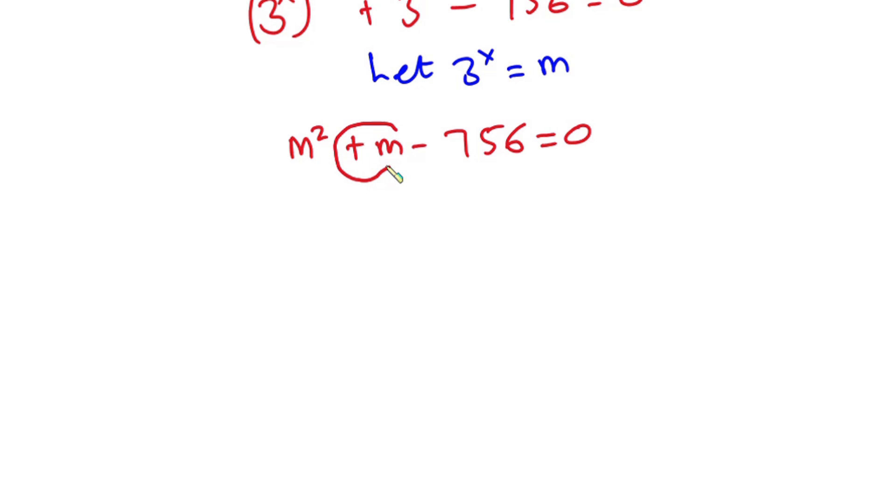And the values are negative 27 and 28. So putting these values into the equation, we have m to the second power minus 27m plus 28m minus 756, and this is equal to zero.